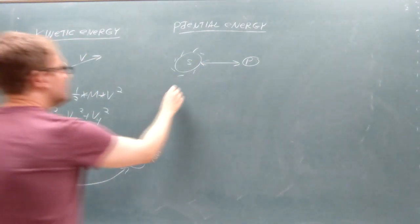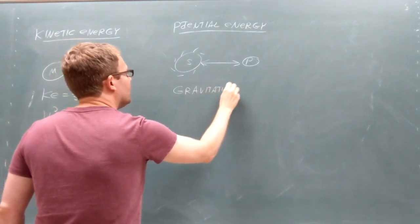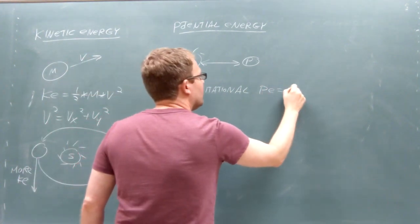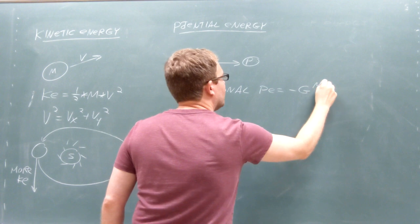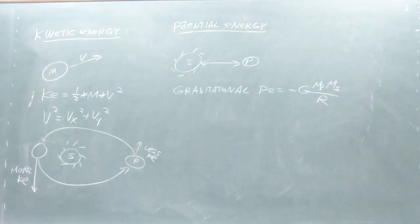For objects in space, we can calculate this potential energy using an equation that looks very similar to the equation for the gravitational force. We take the negative of the gravitational constant and multiply by the mass of the star and the mass of the planet and then divide by the distance between the two.